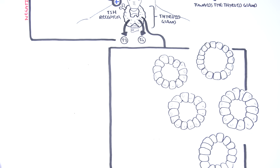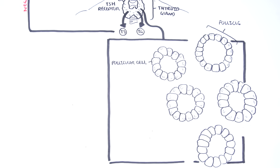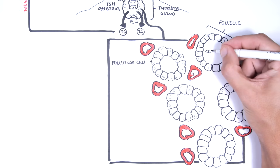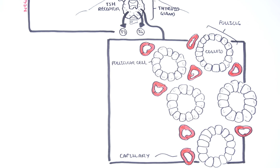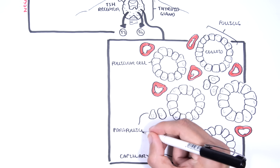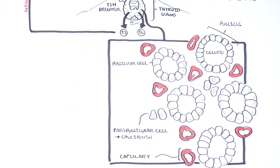The functional units of the thyroid glands are the follicles, made up of follicular cells. The center of the follicle is the colloid. The thyroid gland has a rich blood supply, and the capillaries bring TSH, thyroid-stimulating hormone, to these cells. Next to the follicles are the parafollicular cells, also known as C cells, which produce calcitonin — another hormone with an important role in calcium homeostasis.